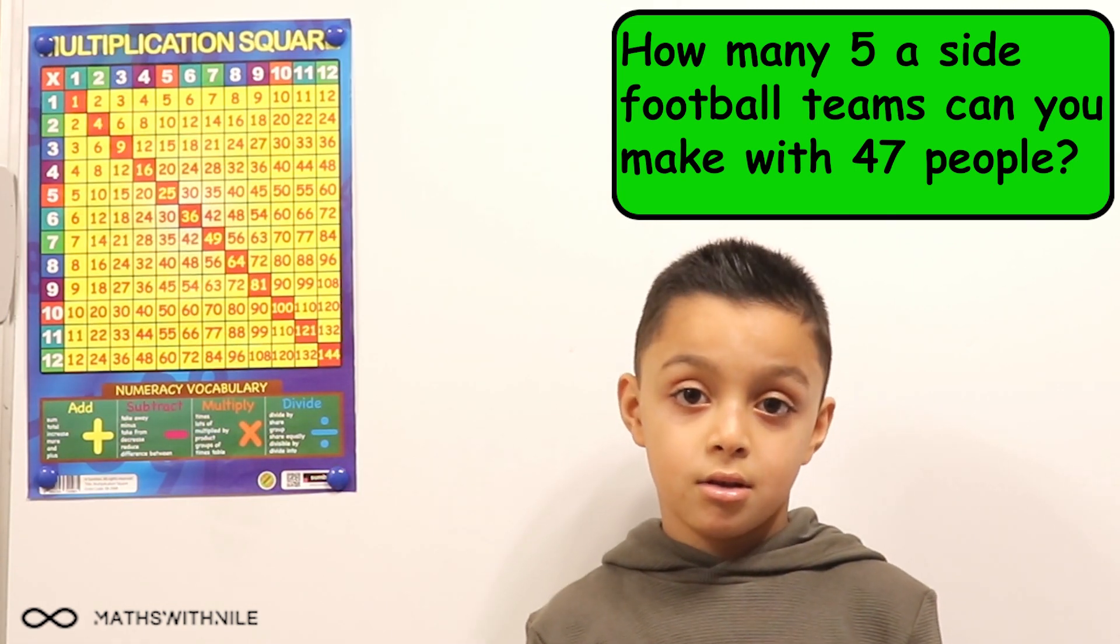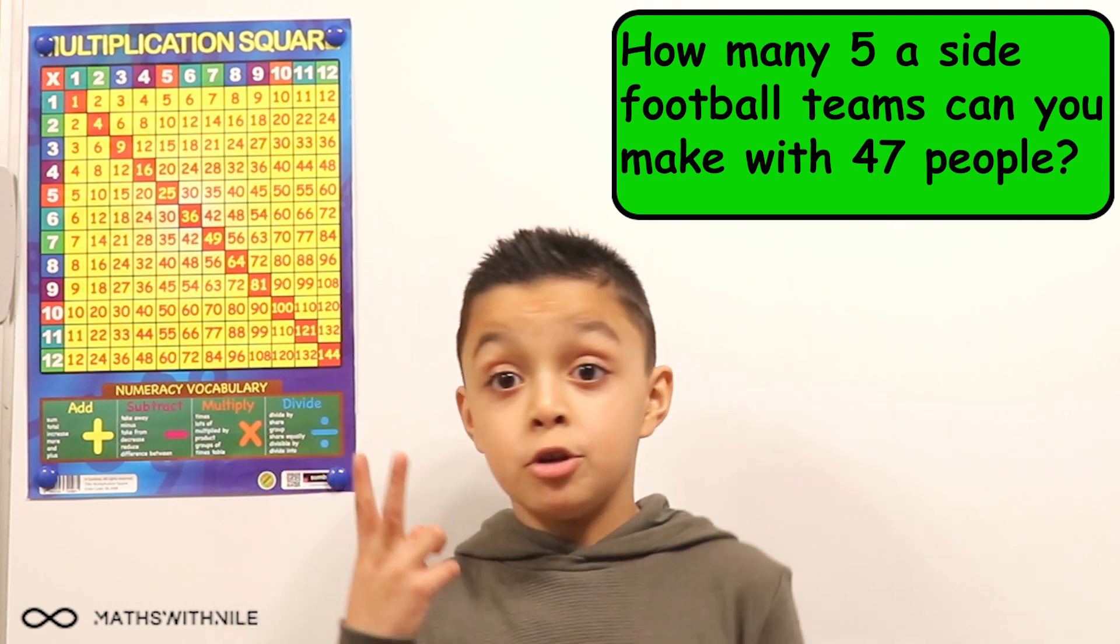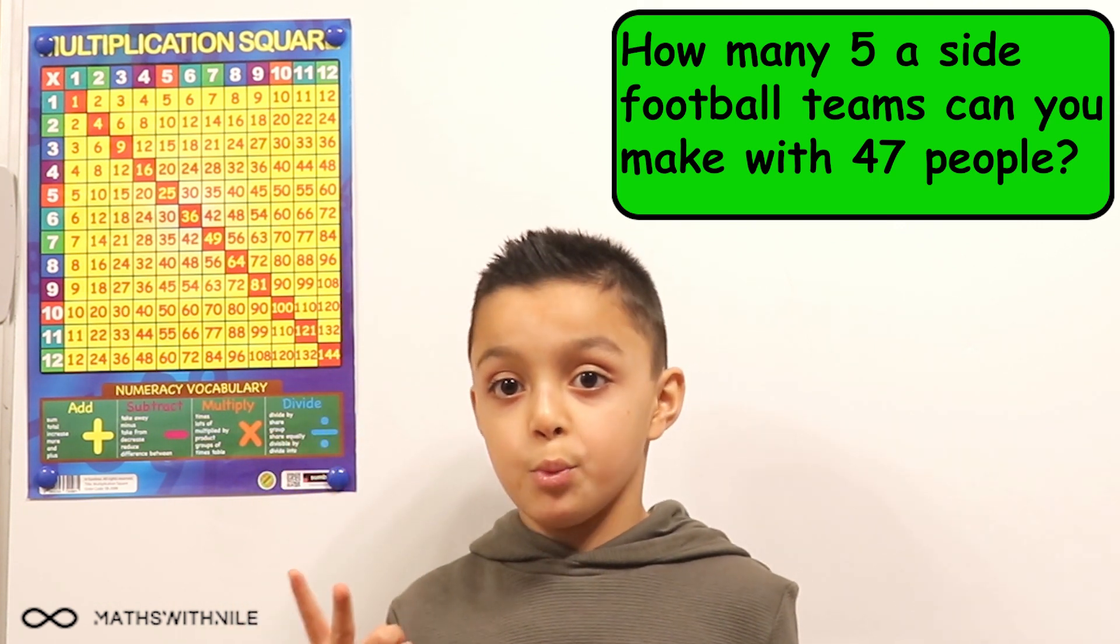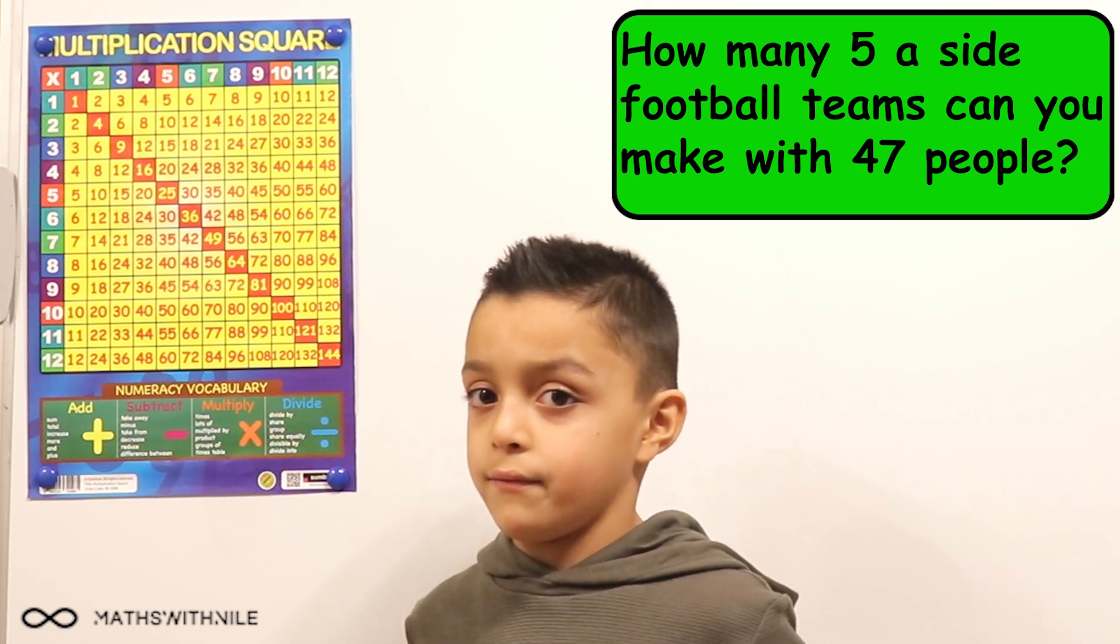How many five-a-side football teams can we have? Nine teams. But we have 47 people. We don't have 45. So what does that mean? We have two remainders. So what would happen? We can't make that a team because it doesn't have five people. Exactly.